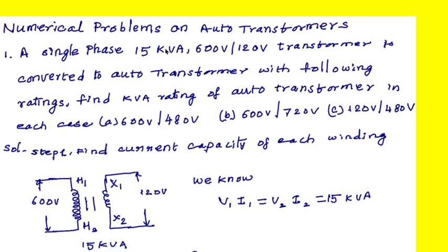What is being asked is: what is the kVA rating of the auto transformer when the primary voltage and secondary voltages are given as in cases A, B, and C? When the problem is given like this, with respect to the two-winding transformer windings, we have to find out what is the current capacity of each winding.